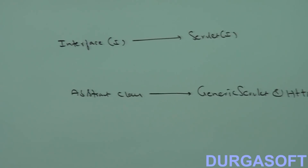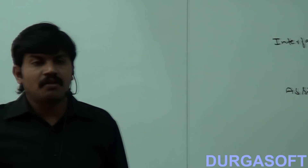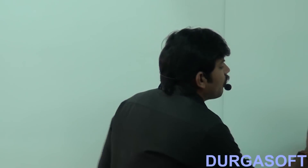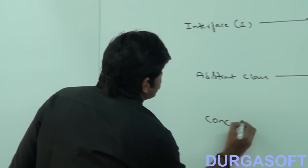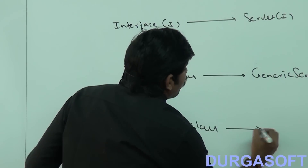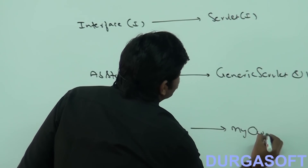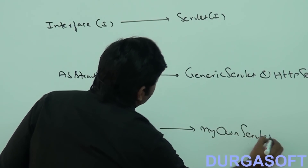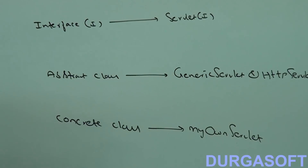Suppose we are talking about implementation completely and are ready to provide service. I am talking about implementation completely, ready to provide service — if you want, you can create my object and call any method, and my method is in a position to provide a response. Then we should go for a concrete class. Whatever servlet we write ourselves is nothing but a concrete class.